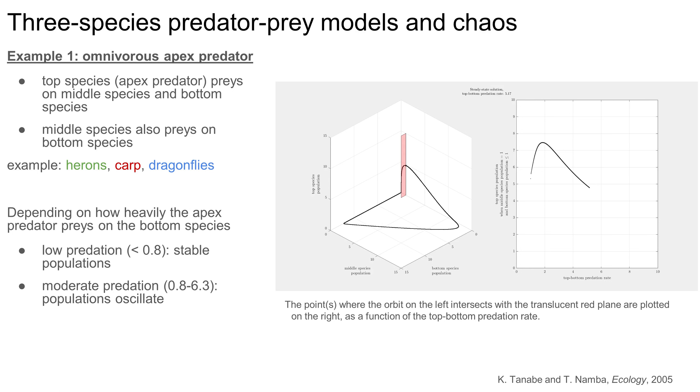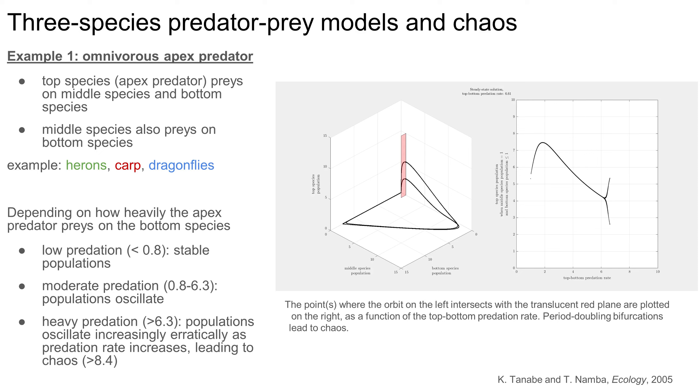One such qualitative change happens when the top versus bottom predation rate reaches about 6.3, where it previously took one orbit for the population levels to repeat themselves, and now takes two. Since the period has doubled from one to two, this change is called a period doubling bifurcation. You can also see this change on the right-hand plot, where the curve has branched in two. Now, as I bump the predation rate a bit higher, another period doubling bifurcation occurs, and it now takes four orbits for the population levels to repeat themselves.